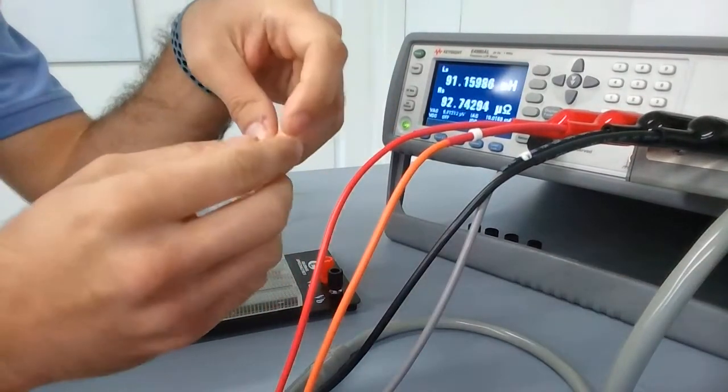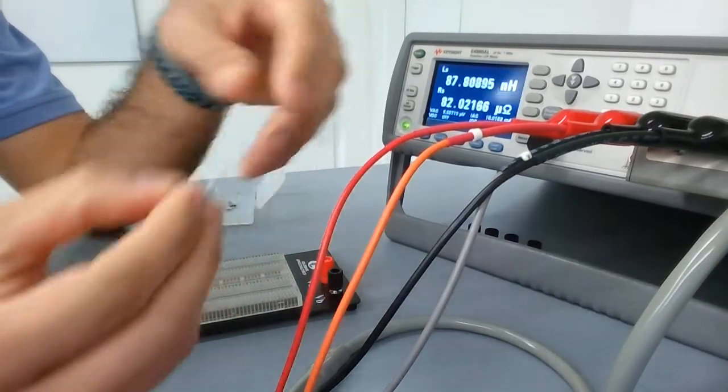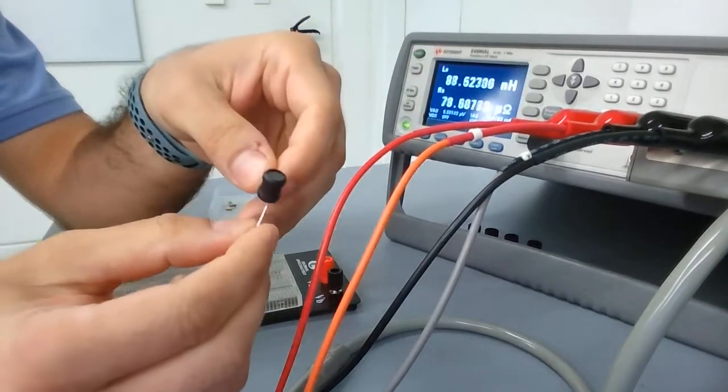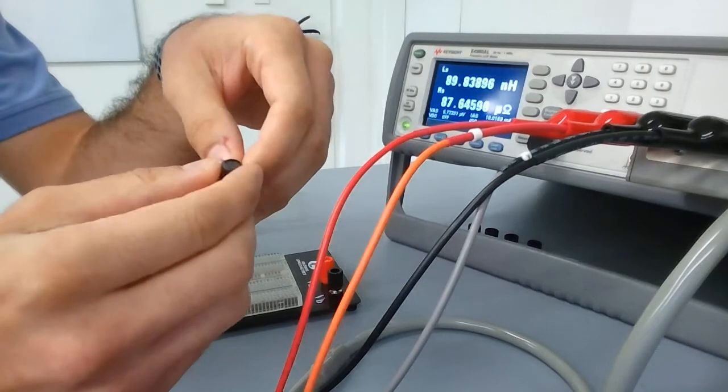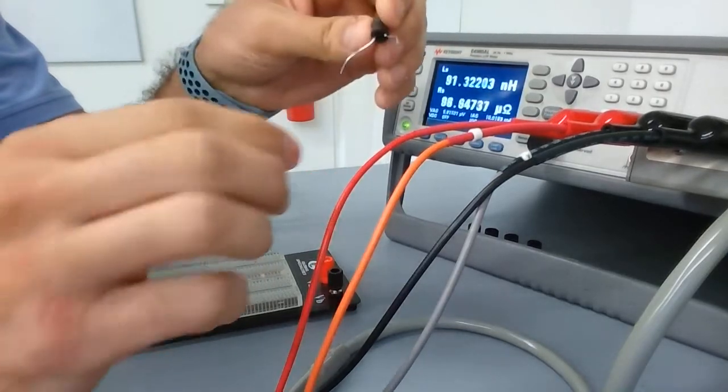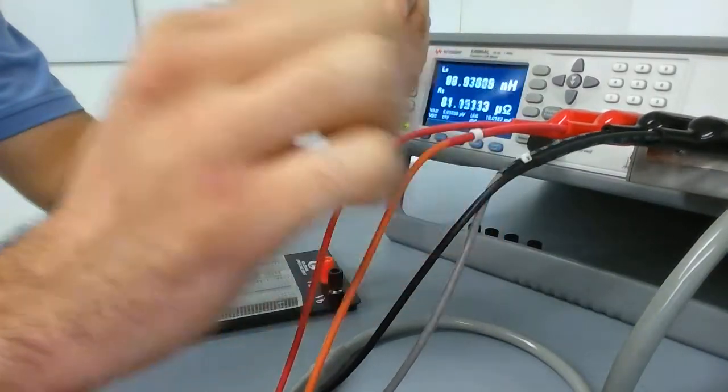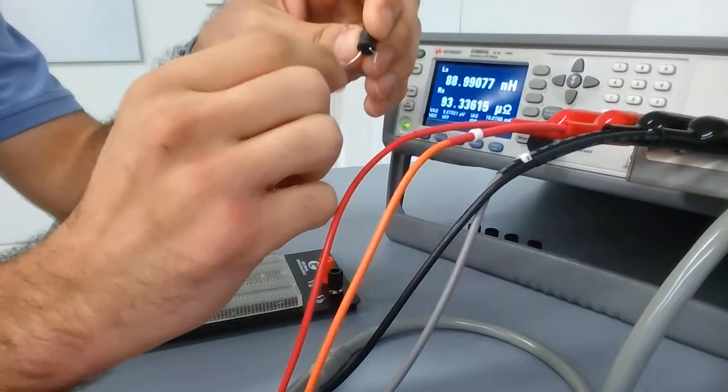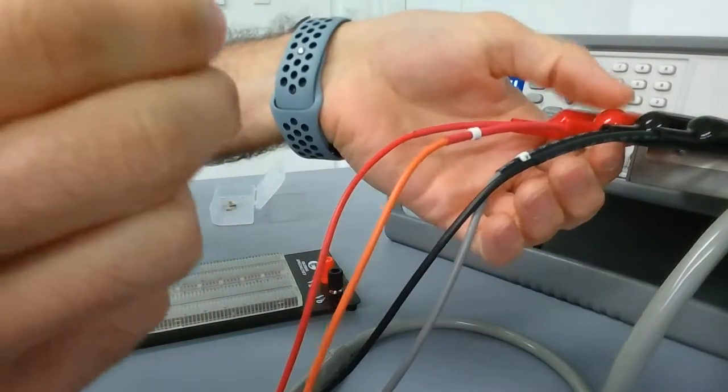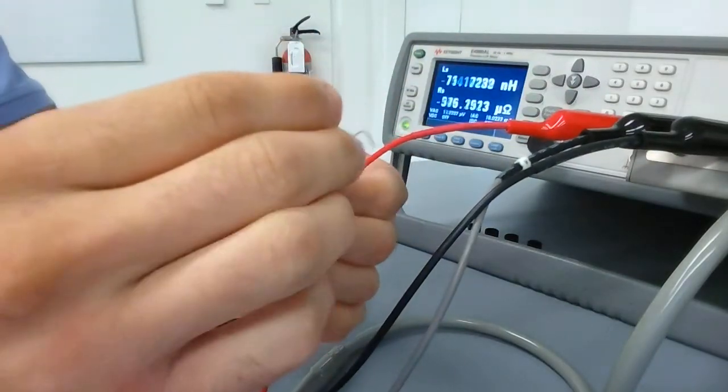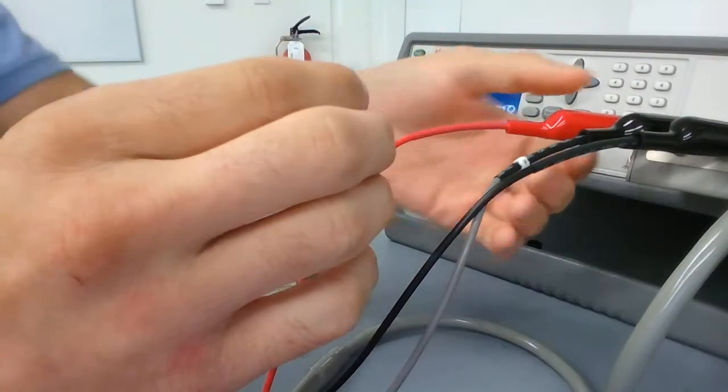It's a little clunky but you'll get used to it. Say I want to measure the value of this inductor here. The thing to remember is you want to connect the voltage probes closer to your component and then the current probes further out.